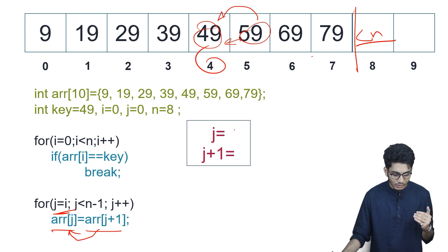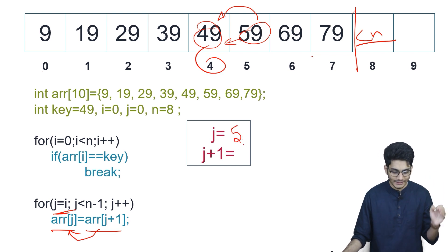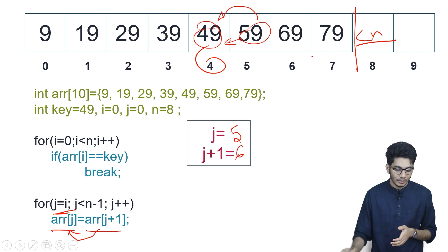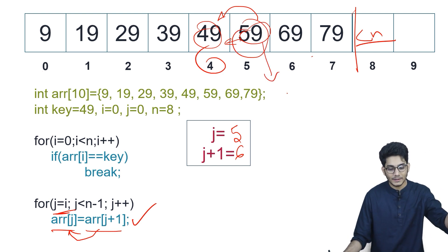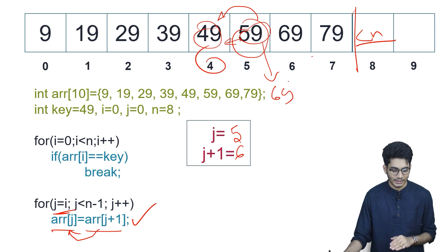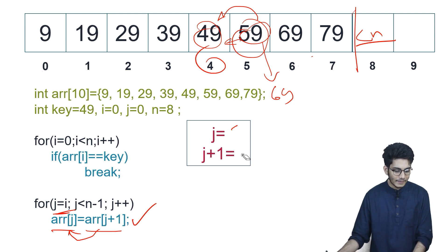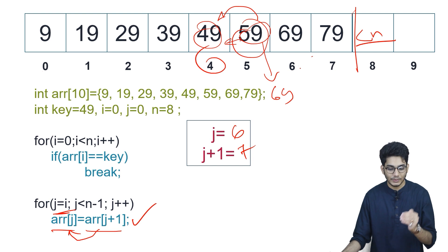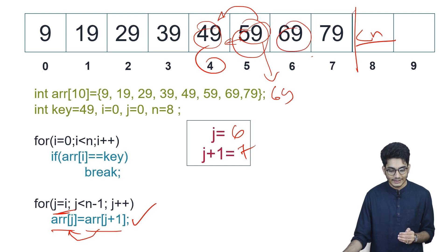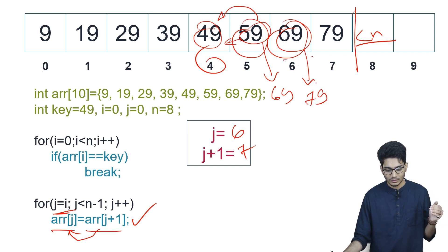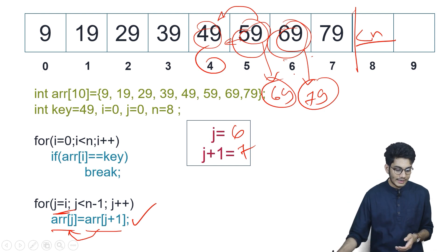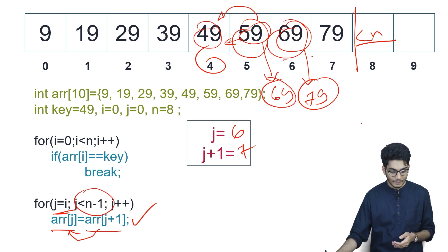We increment j to 5. j plus 1 is 6, so arr[5] equals arr[6] — 59 is replaced with 69. We increment j to 6. j plus 1 is 7, so at the sixth position, 69 is replaced with 79. We were traversing up to n minus 1.